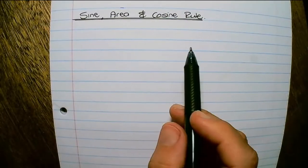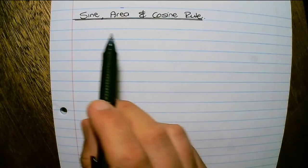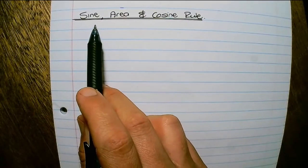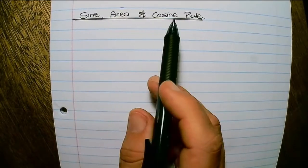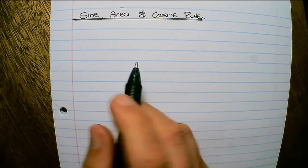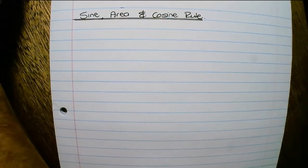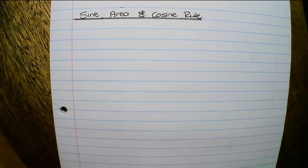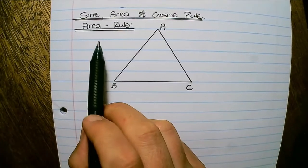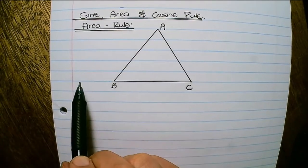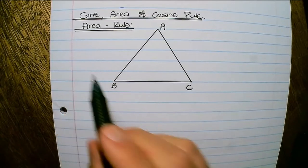In this video we'll discuss examples of the Sine, Area and Cosine rule. First off the Area rule.